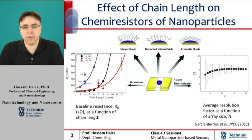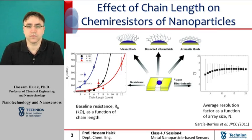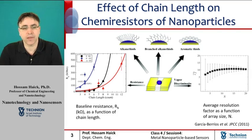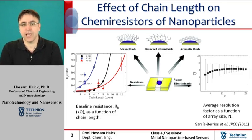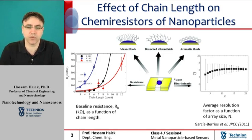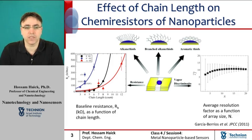In the presented experimental results, three different groups of capping molecules were tested: alkanethiols, branched alkanethiols, and aromatic thiols. As seen in the left figure, molecules with different backbone structures have different effects on the baseline resistance of the nanoparticle-based chemoresistor. It can be easily seen that the longer the chain length of any studied category of ligands, the higher is the baseline resistance. This makes the average distance between the nanoparticles larger, and therefore the baseline resistance of the chemoresistor is also higher.